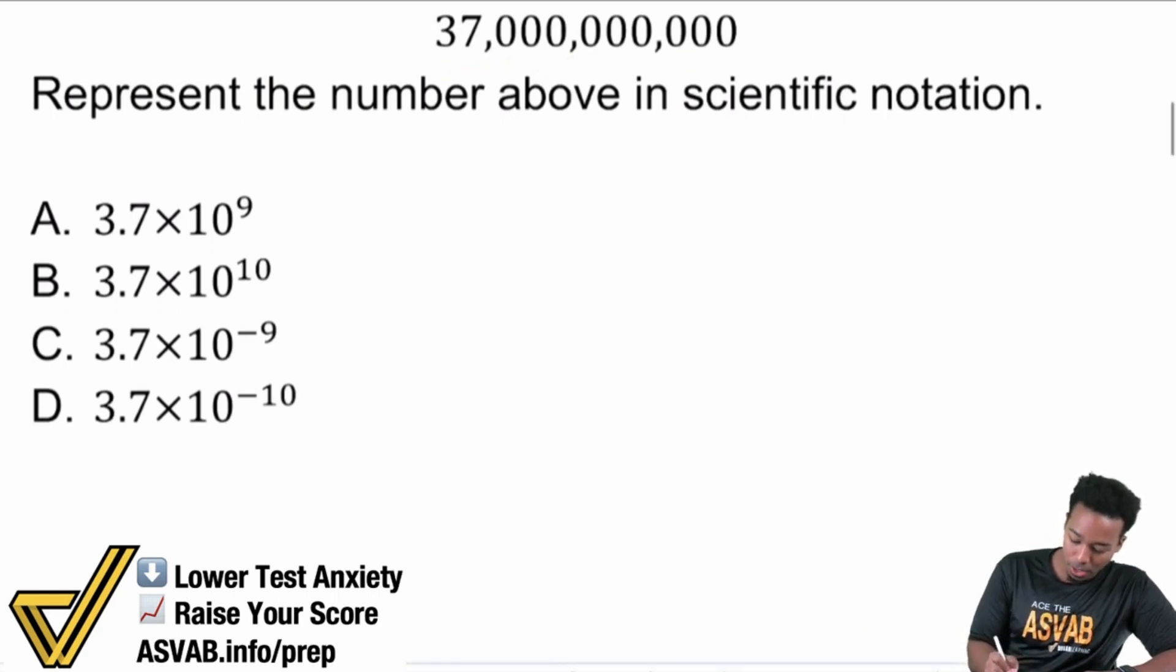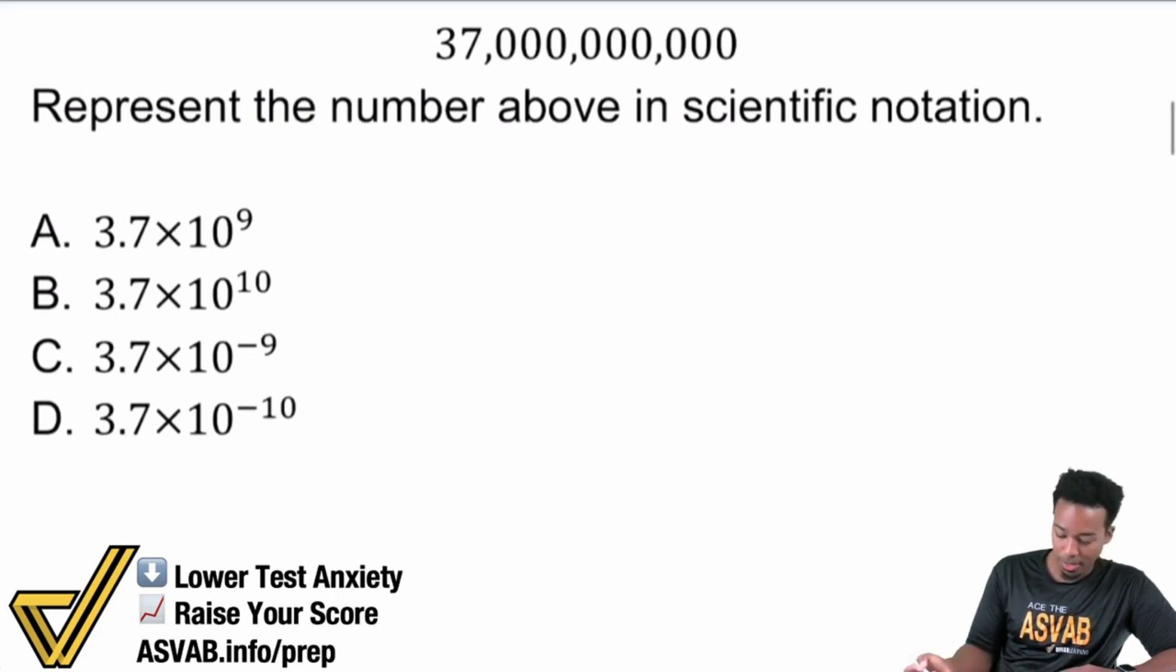So we have this big number right here. We have 37, and what is that? Million? Billion? Trillion? That is going to be billion. So 37, this would be thousand, million, billion. That is 37 billion. How do we write that in scientific notation?